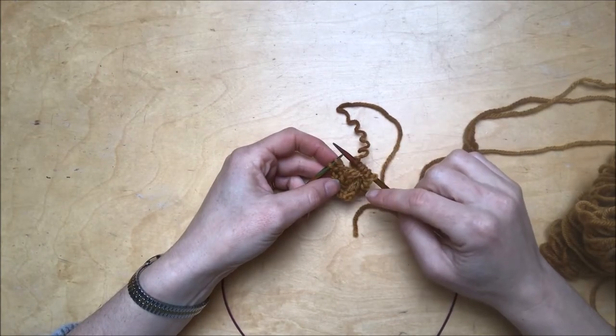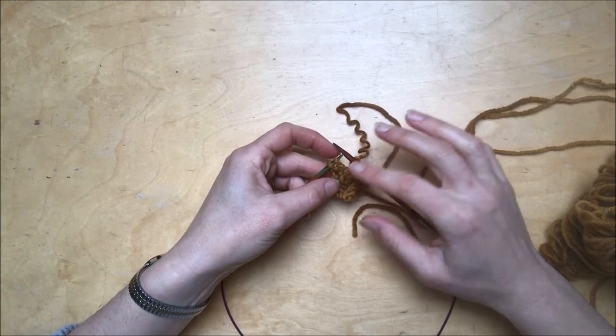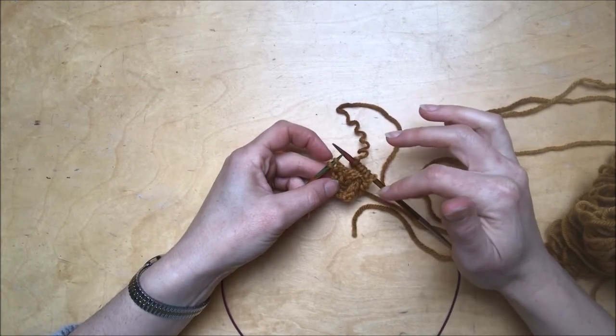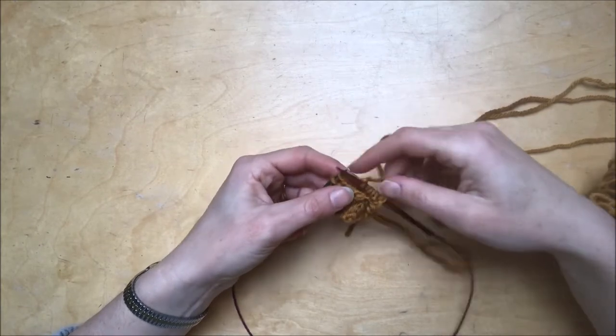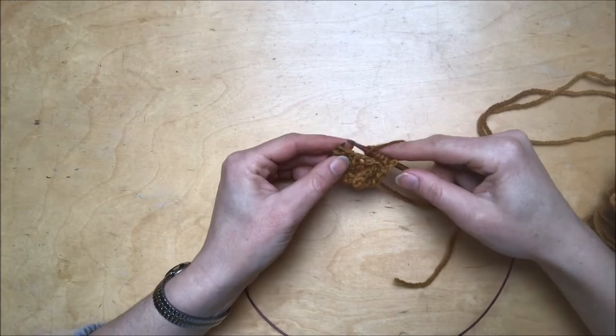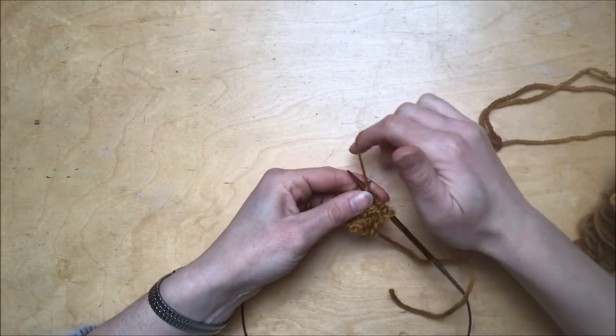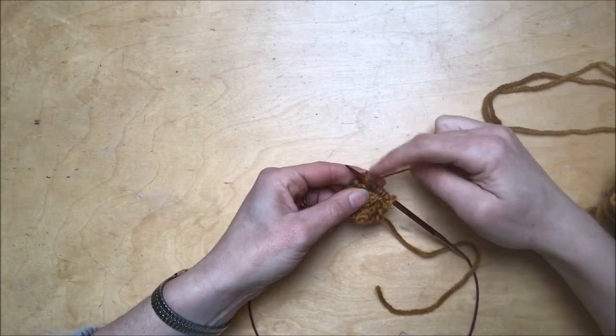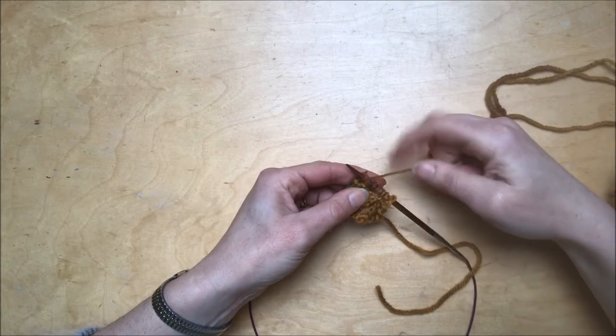The reason for it is because the purl stitch is much looser, because it uses more yarn than the knit stitch. For instance, with a typical purl stitch when you knit it, it wraps all the way around the needle like that, so it uses a great deal of yarn.